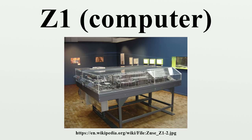The Z2 and Z3 were follow-ups based on many of the same ideas as the Z1 design. The Z1 contained almost all parts of a modern computer — i.e., control unit, memory, micro-sequences, floating-point logic, and input-output devices. The Z1 was freely programmable via punch-tape and a punch-tape reader. There was a clear separation between the punch-tape reader, the control unit for supervising the whole machine and executing instructions, the arithmetic unit, and the input and output devices. The input-tape unit read perforations in 35mm film.